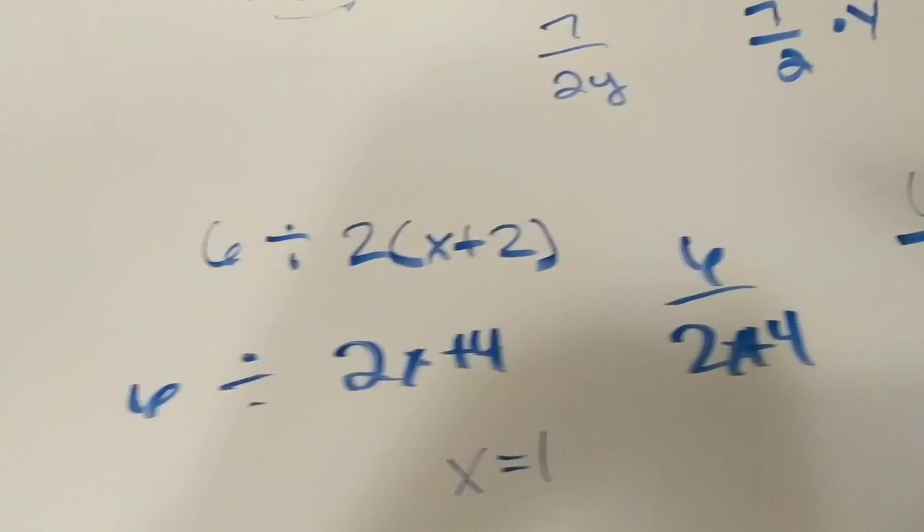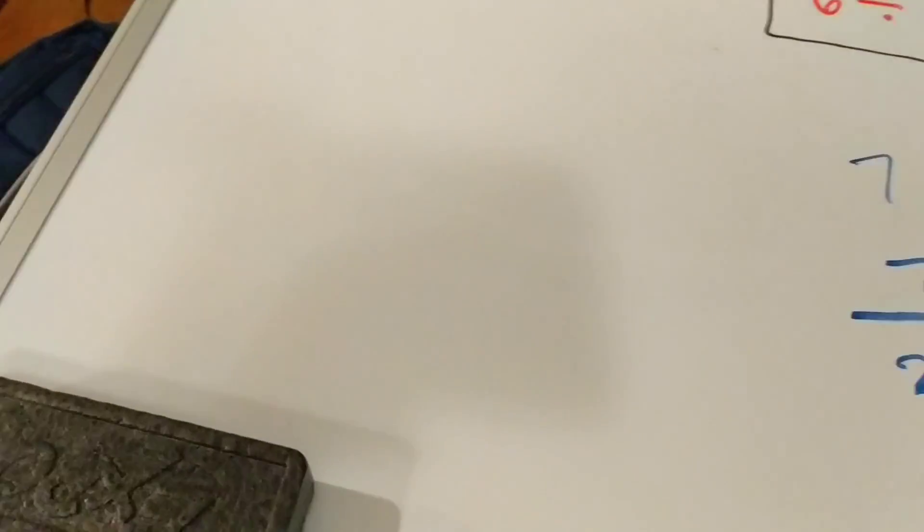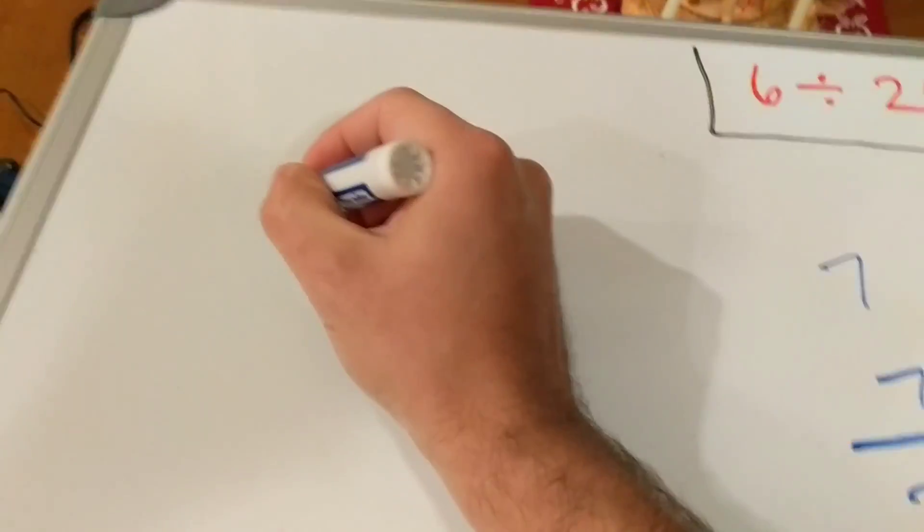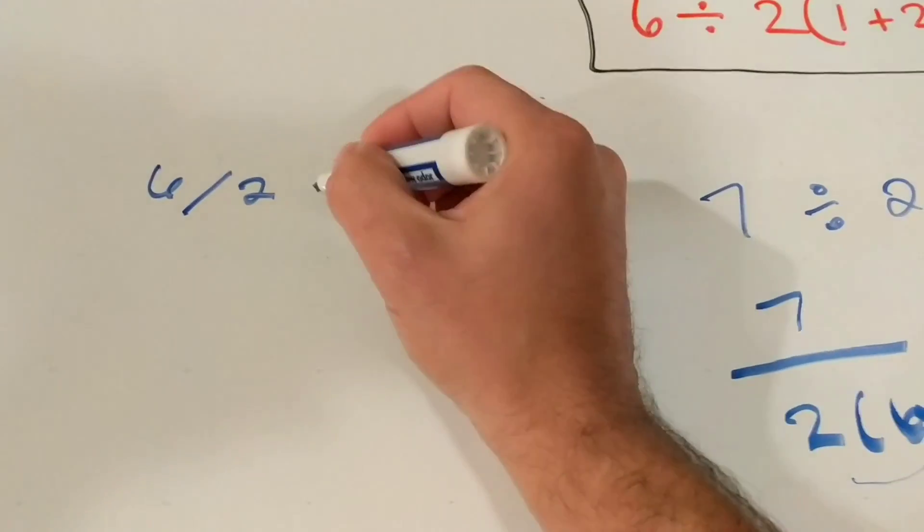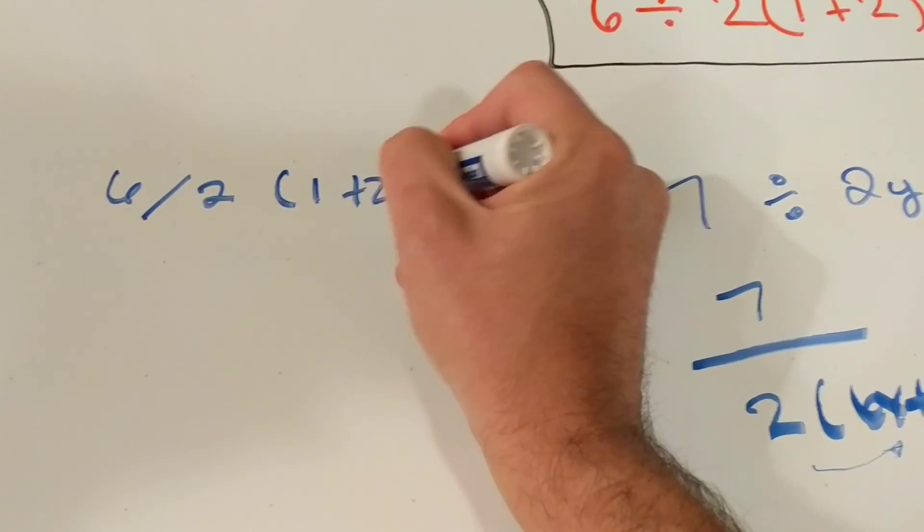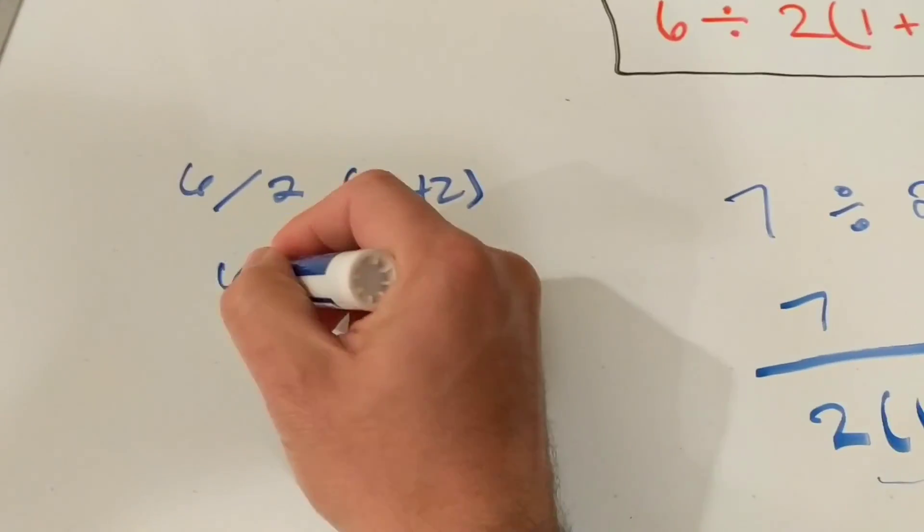So, some people say, well I plugged into Google and Google or Excel tells me the answer is 9. Well, of course it does because what you plugged in was 6 slash 2 times 1 plus 2. Well, what this slash does is you're telling the computer that it's 6 halves.